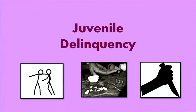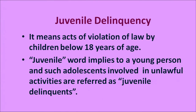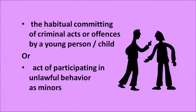Now we will talk about juvenile delinquency. In this picture, you can see different stages — the child may start fighting with others, then indulge in various kinds of wrong activities, and it may turn into crime. Juvenile delinquency means the act of violation of laws by children below 18 years of age. The word juvenile implies a young person; such adolescents involved in unlawful activities are referred to as juvenile delinquents. It is primarily the habitual committing of criminal acts or offenses by a young person.